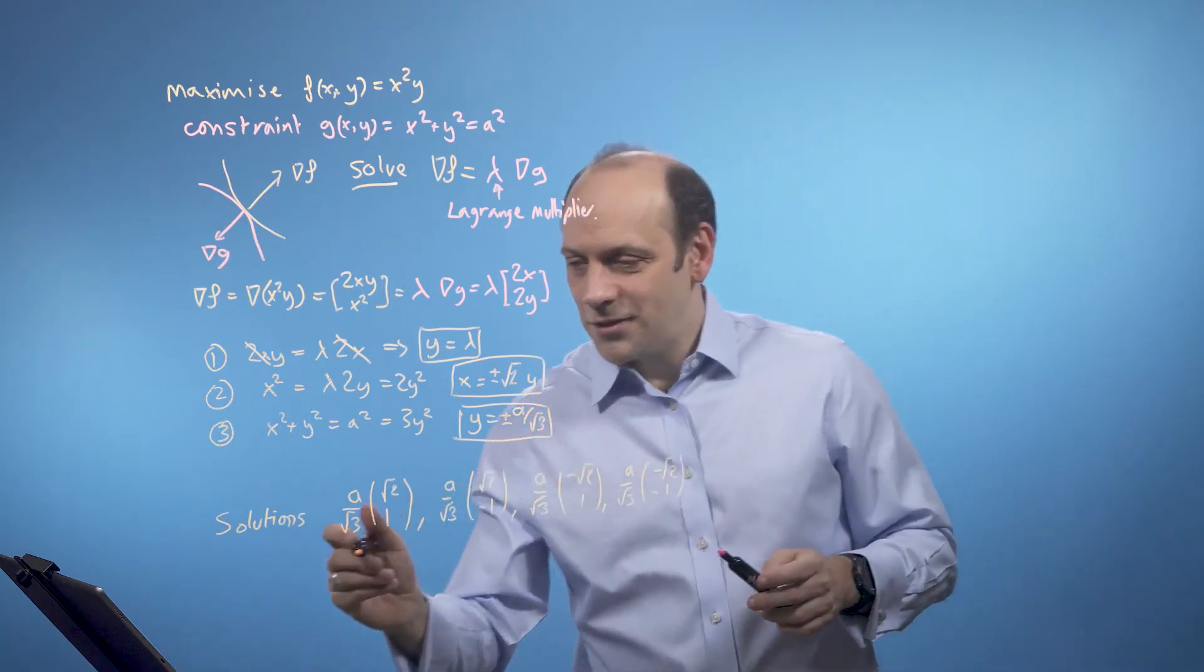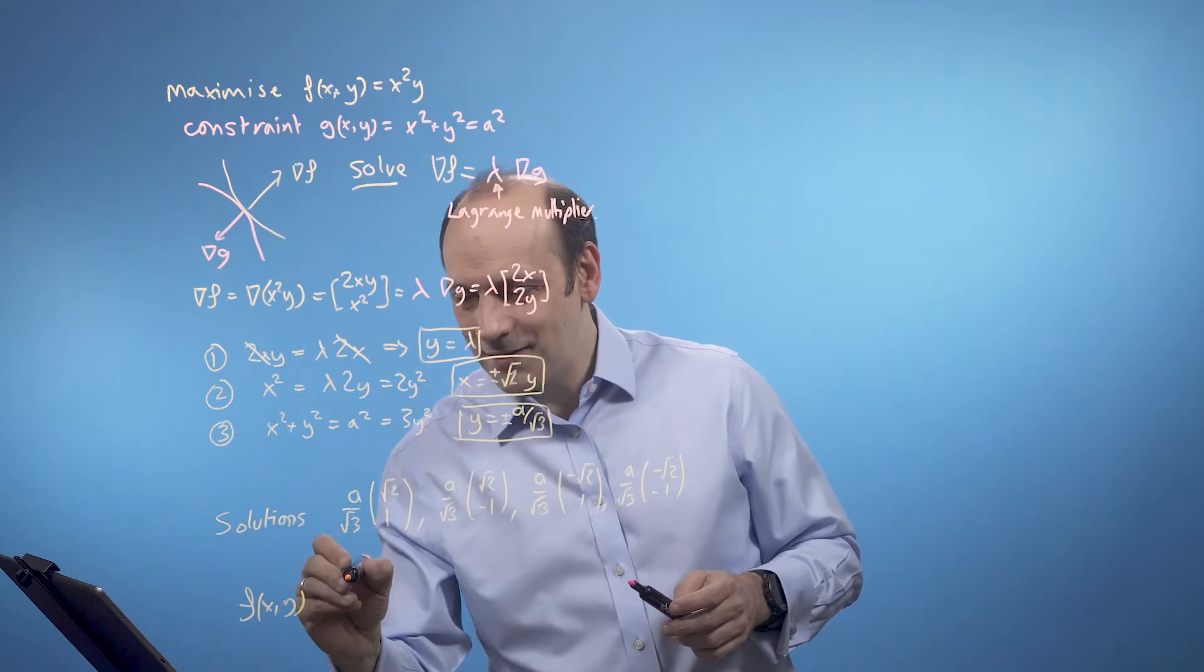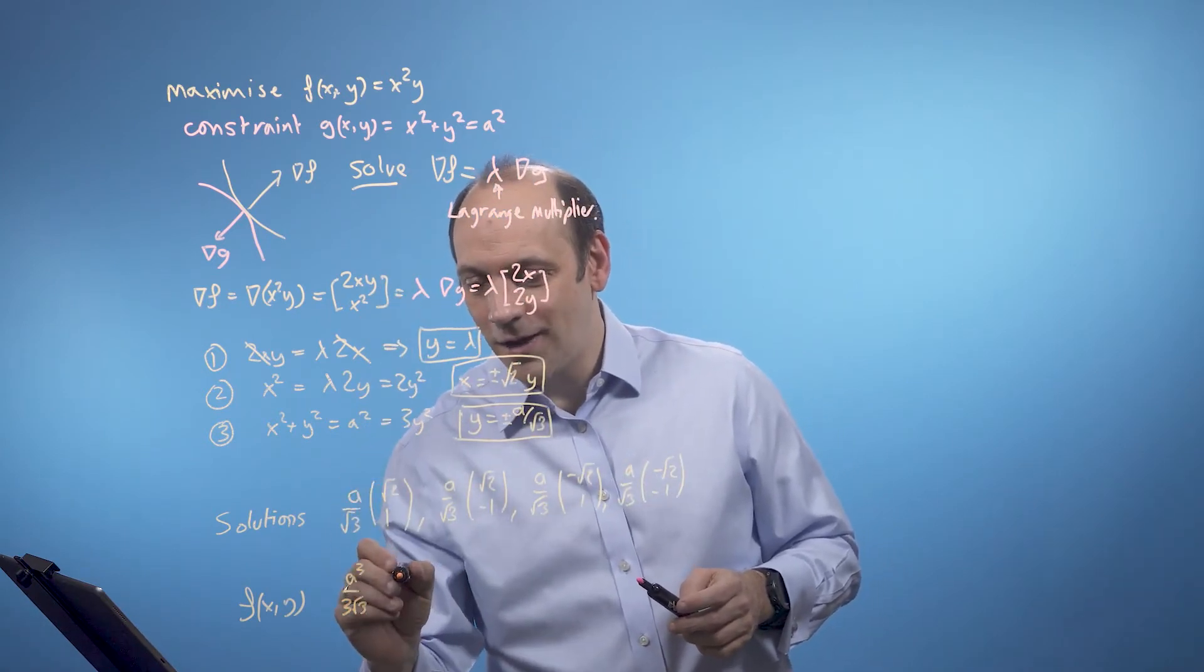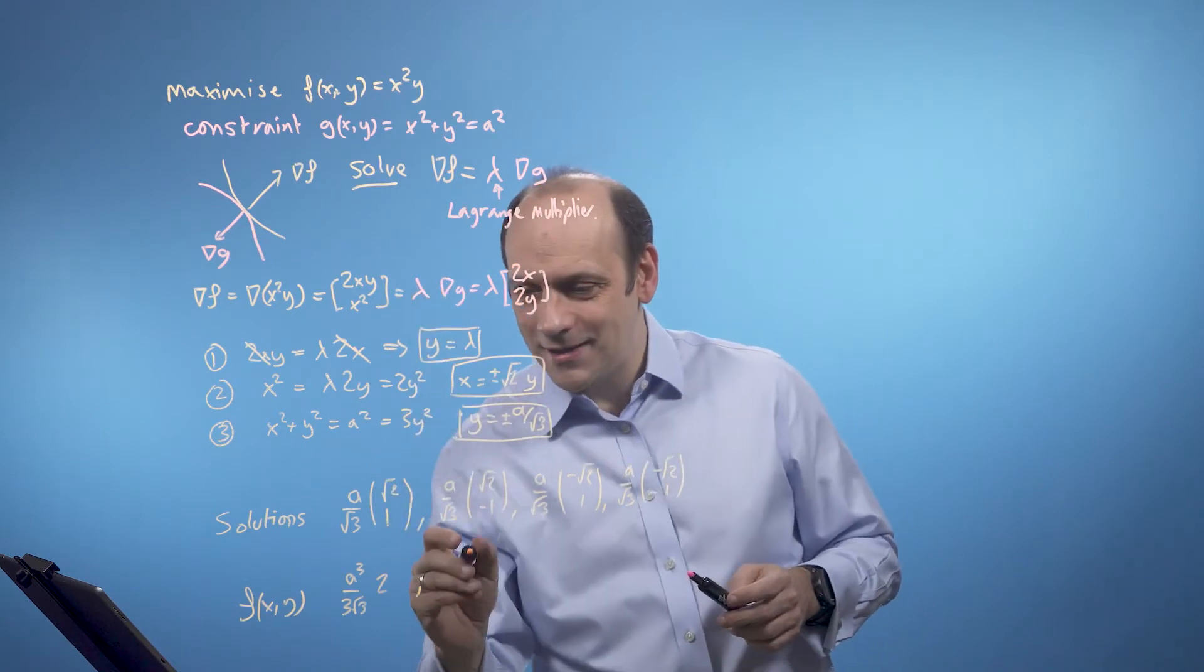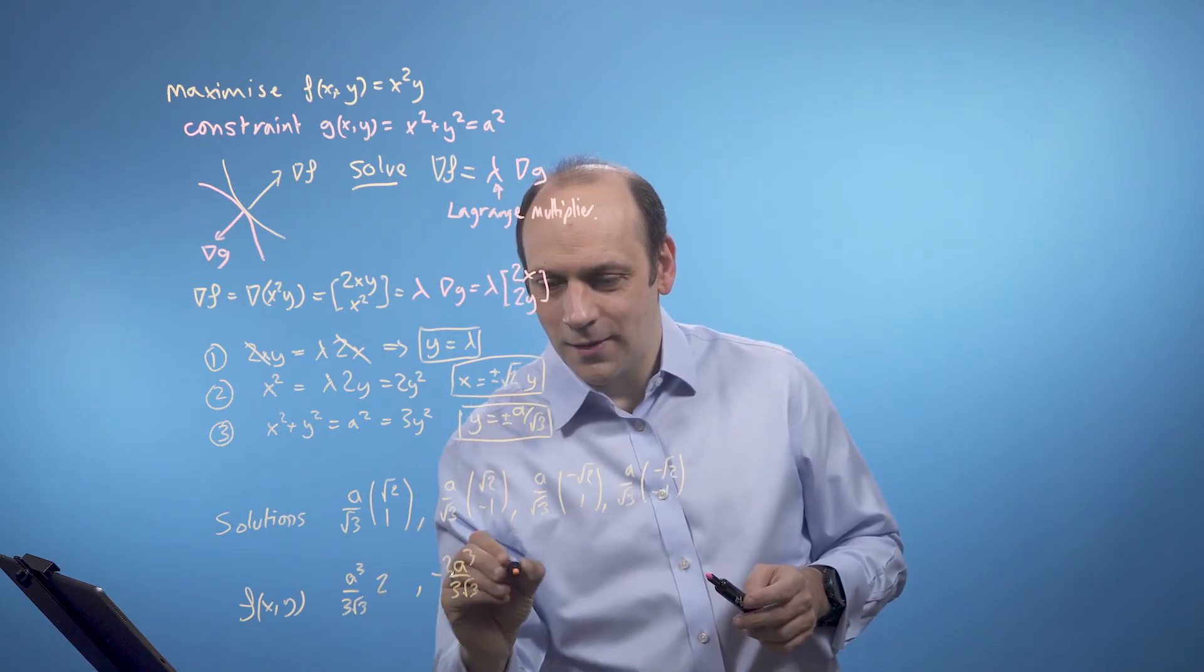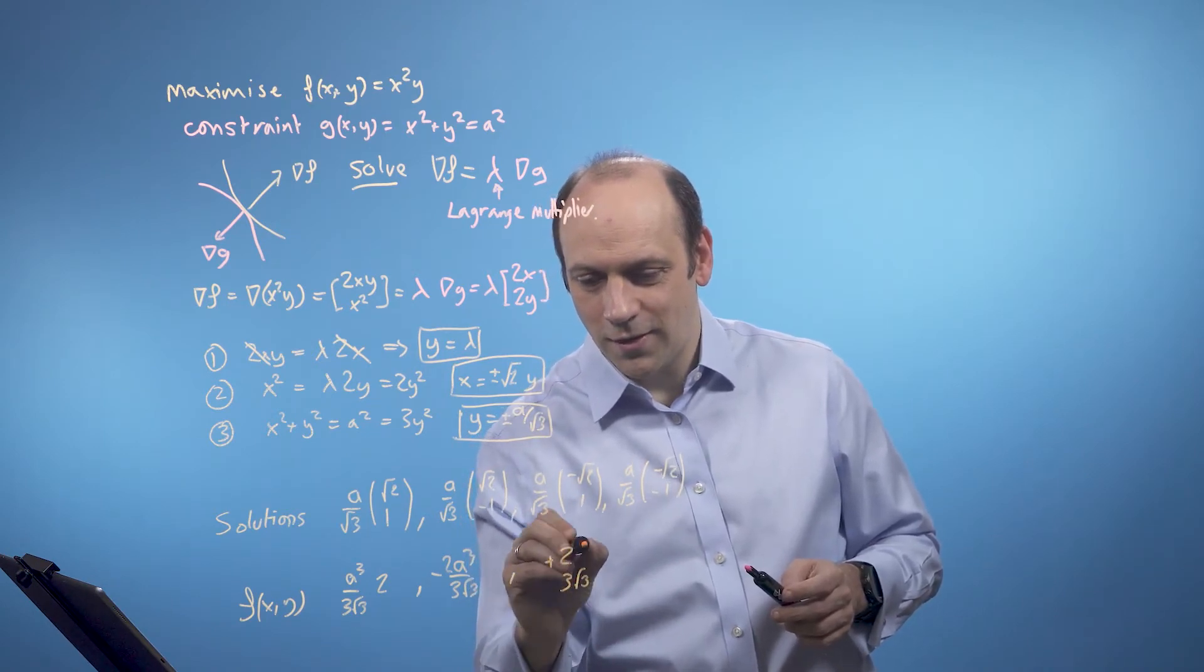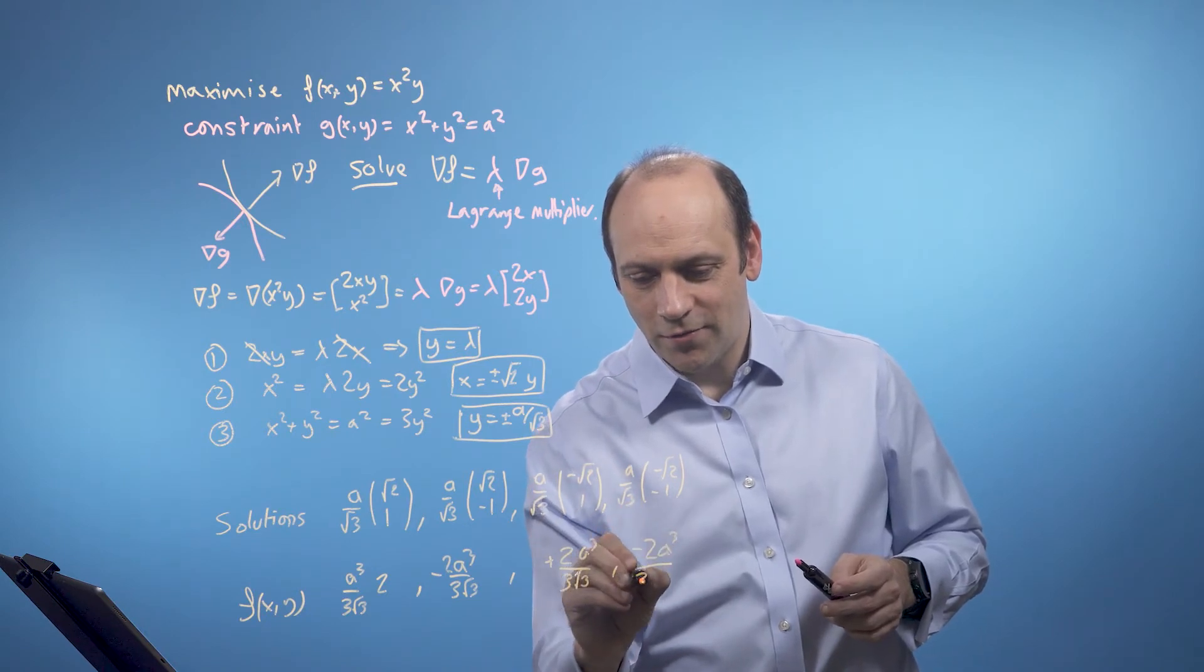Now, if I find the values of the function f of x, y, as I go, take all of those. So I've got to find x squared y for that. So that's a cubed over 3 root 3, because I'm cubing that bit in effect. And I've got x squared is 2 times y is 1, so that's 2. Here, I've got the same thing, but I've got y is negative. So now I've got a cubed over 3 root 3 times minus 2. This one's y is plus, and when this squares, the minus sign is going to disappear. So this is going to give you another plus solution, 2 over 3 root 3 a cubed. And I've got here y is negative, so I'm going to get a minus here, a cubed over 3 root 3.